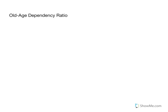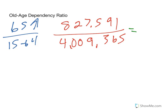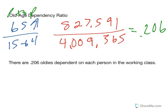Let's go to old age dependency. Now we want 65 and over compared to 15 to 64. The 65 and older is 827,591 compared to 4,009,365. We divide and get 0.206. Again, part to part. There are 0.206 oldies dependent on each person in the working class. I'm not being disrespectful calling them oldies - my parents would smack me around - but because I'm lazy and don't want to write much stuff out, that's what I'm using.